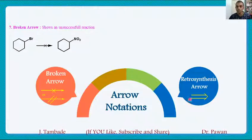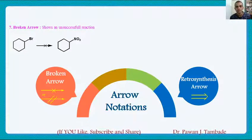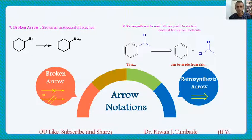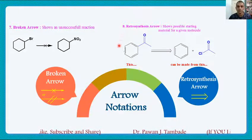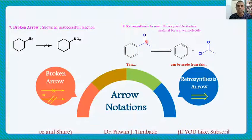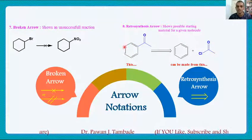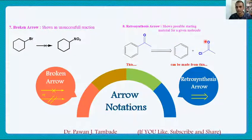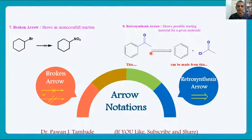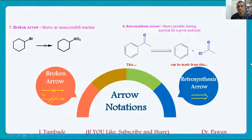Last but not least is the retrosynthesis arrow. This retrosynthesis arrow, which is an open arrow, is used to show the path via which a particular target molecule can be achieved. For example, if I want to make a certain molecule, I will theoretically think how it can be made and conclude that it can be obtained from a certain starting material. This retrosynthetic theoretical path is shown using the retrosynthesis arrow.